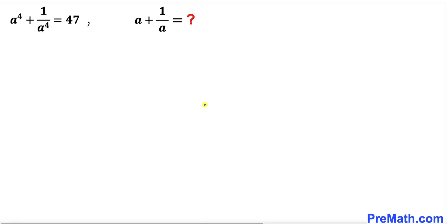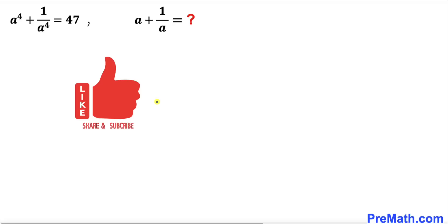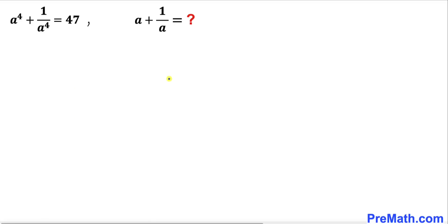Welcome to pre-math. In this video we have got this problem: if a to the power 4 plus 1 divided by a to the power 4 equals 47, then we are going to find the value of a plus 1 divided by a. Please don't forget to give a thumbs up and subscribe. So let's go ahead and get started with the solution and let's focus on this very first equation.